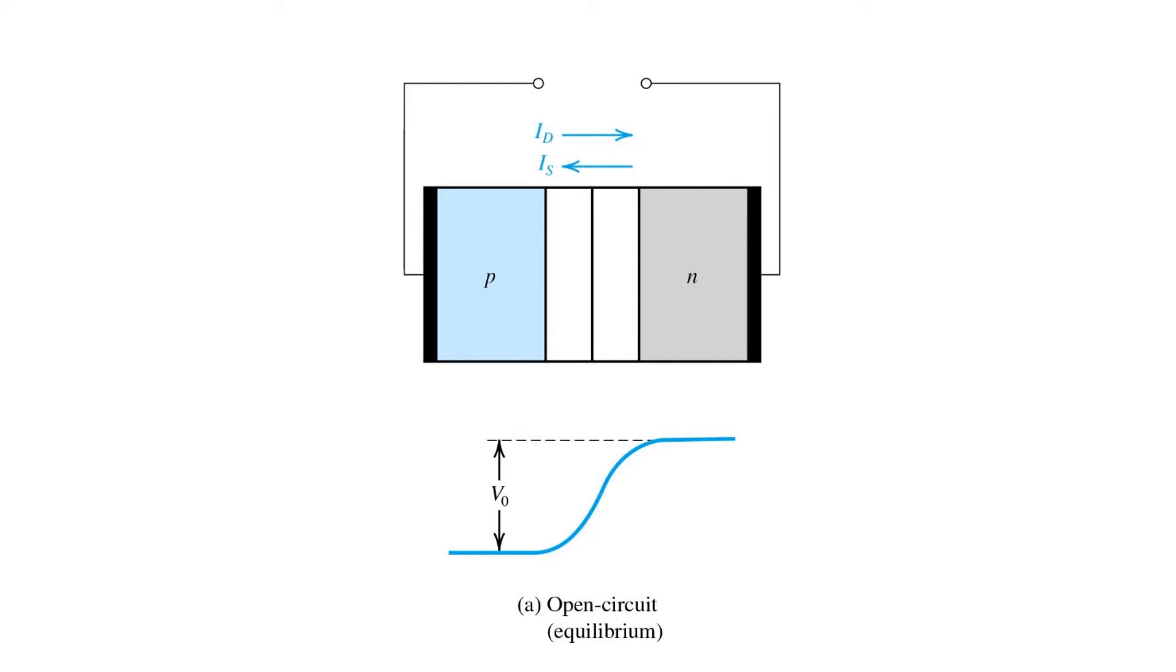Recall that when left open-circuited at its two terminals, the PN junction will arrive at a steady state where there's a depletion region formed at the interface between the P and N type materials, where net positive and negative charge give rise to an electric field setting up a built-in potential voltage, V0.